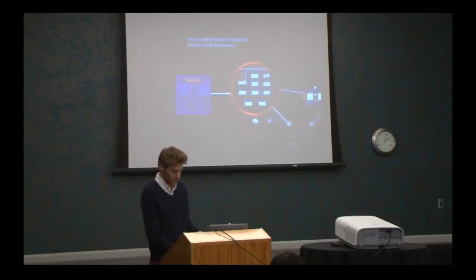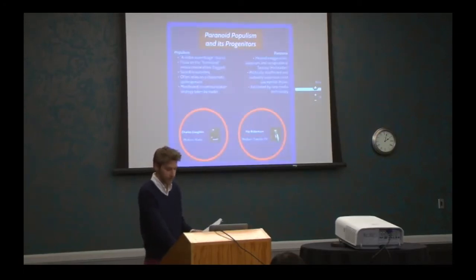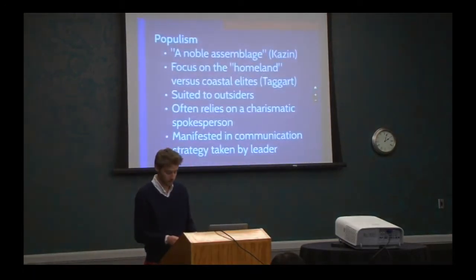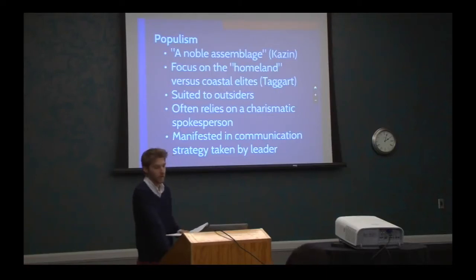Although populism in American politics has eluded precise definition, scholars nonetheless agree on several of its characteristics. As its name suggests, populism proposes to advocate for the people, though in truth populists specifically revere ordinary people, or what Michael Kazin dubs a noble assemblage. In fact, it may be more appropriate to refer not to a group of people, but to a place, what Paul Taggart calls the heartland. Populism is defined in its opposition to a selfish coastal elite, unconnected and unconcerned with the plight of the heartland.